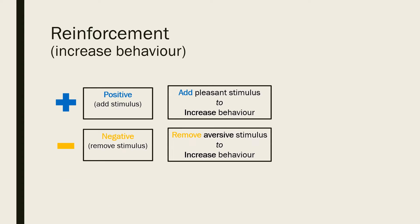The removal of an unpleasant stimulus can also strengthen behaviour. This is known as negative reinforcement, because a response is strengthened by the removal of something considered unpleasant. For example, if your child starts to scream in the middle of the grocery store but stops once you hand him a treat, you will be more likely to hand him a treat the next time he starts to scream. Your action led to the removal of the unpleasant condition — the child screaming — negatively reinforcing your behaviour. Ultimately, in both cases of reinforcement, the behaviour increases.